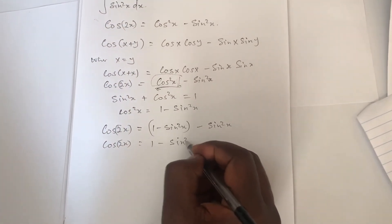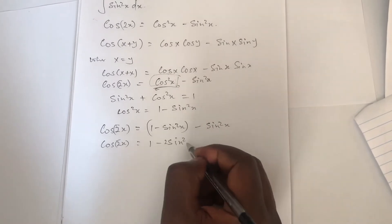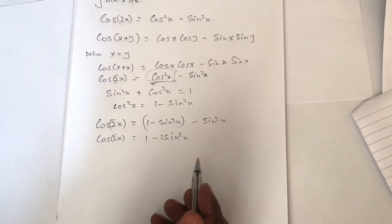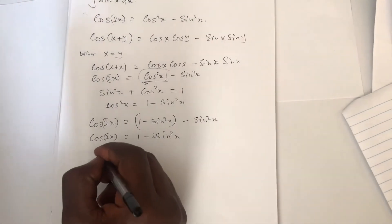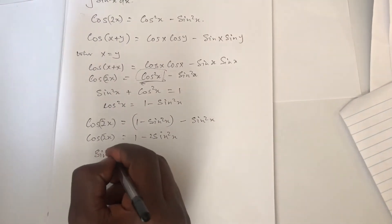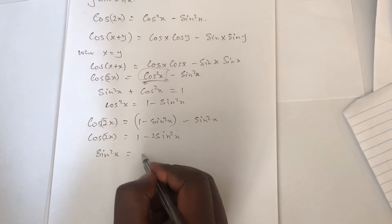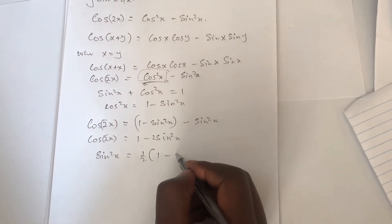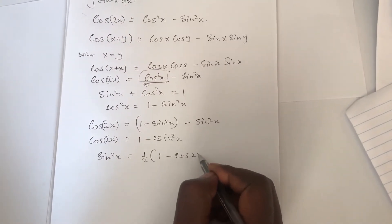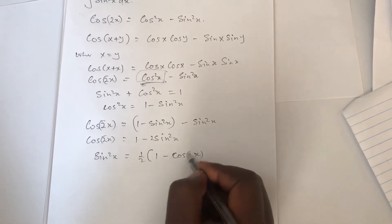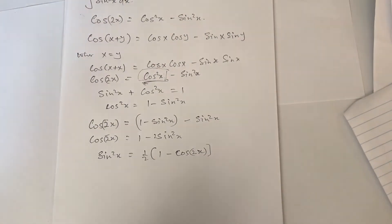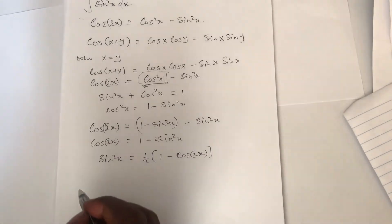Simplifying this, we get cos 2x equals 1 minus 2 sine squared x. Rearranging for sine squared x, we arrive at sine squared x is equal to one half times (1 minus cos 2x).